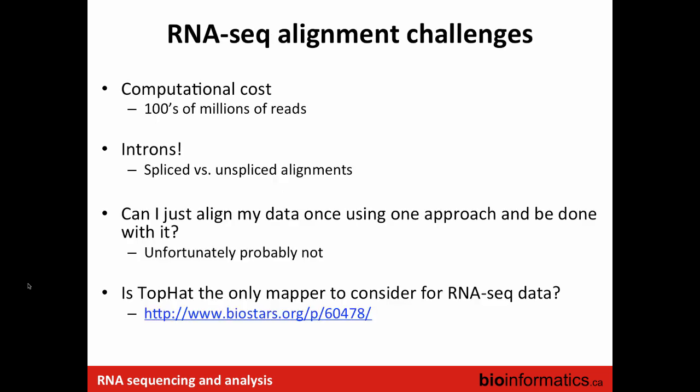When it comes to RNA-seq alignment, we face a few challenges. One is the computational cost. Each lane of sequencing — for example, using HiSeq 2500 — can generate 300 to 400 million reads, and usually you do one to two samples per lane. So we're talking about hundreds of millions of reads that you have to align to the genome. That process is computationally expensive and you will need computational instances such as Amazon. The process is also time consuming.